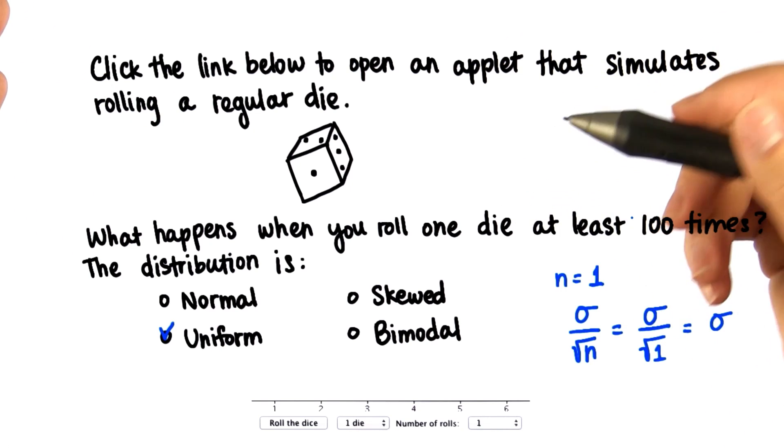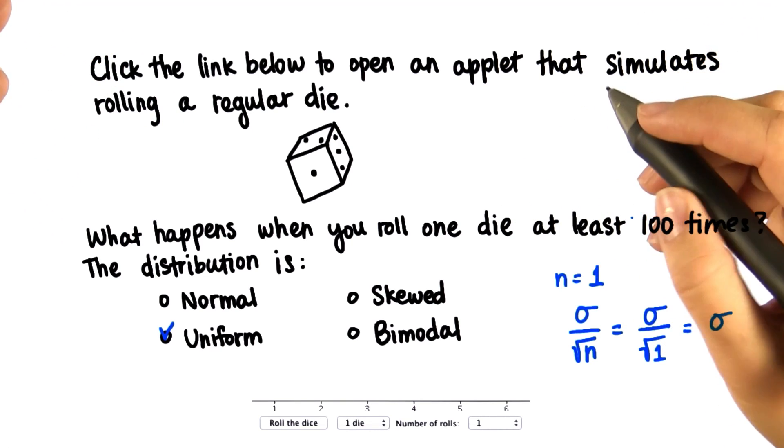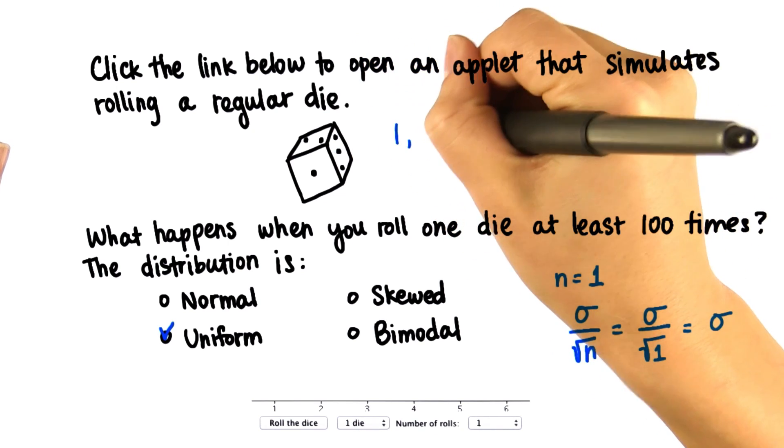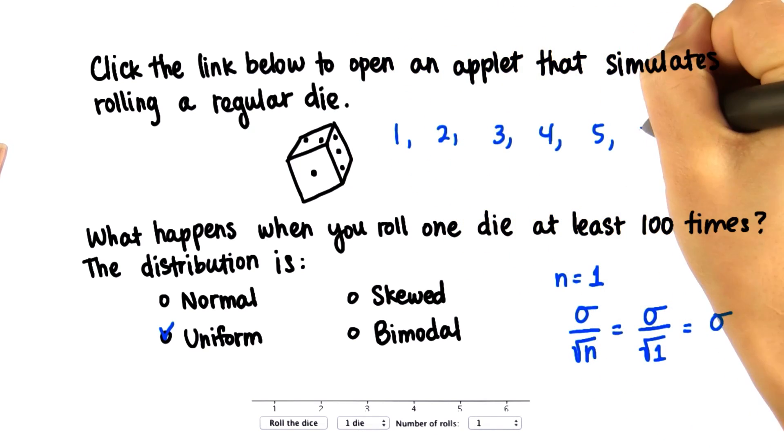So we'll get a distribution that's approximately equal to the distribution of the population, which is uniform since we just have one, two, three, four, five, and six.